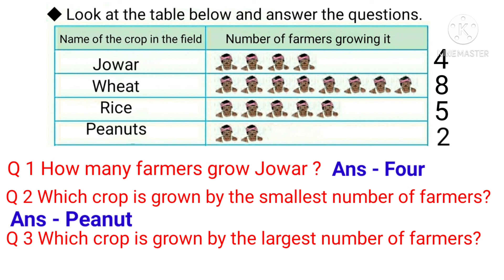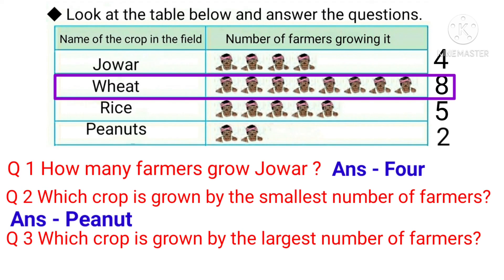If we look carefully, we can see 8 farmers grow wheat in their farms, which is the largest number.